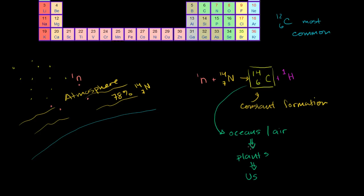Now why is this even interesting? I've just explained a mechanism where some of our body, even though carbon-12 is the most common isotope, gets made up of this carbon-14 while we're living. The interesting thing is the only time you can take in this carbon-14 is while you're alive — while you're eating new things — because as soon as you die and get buried under the ground, there's no way for carbon-14 to become part of your tissue anymore, because you're not eating anything with new carbon-14.